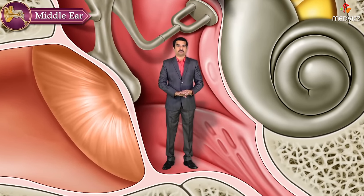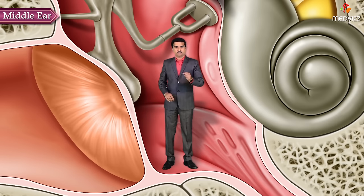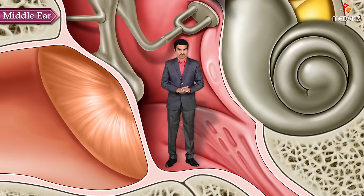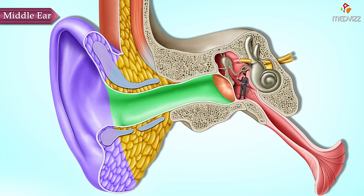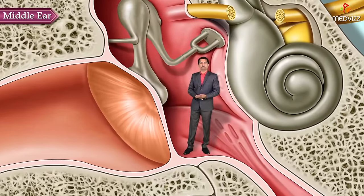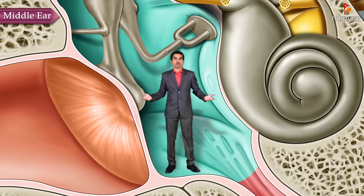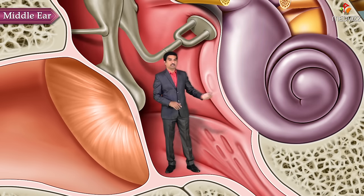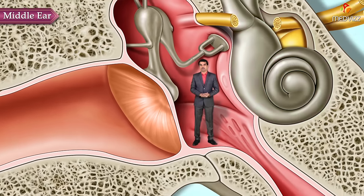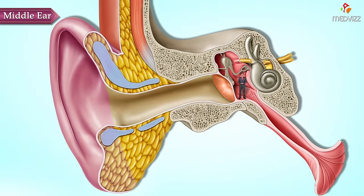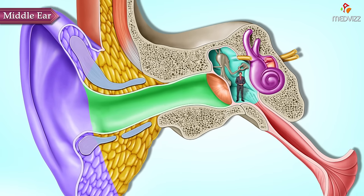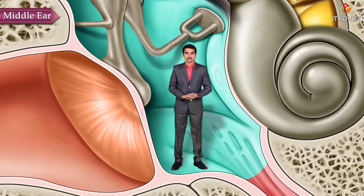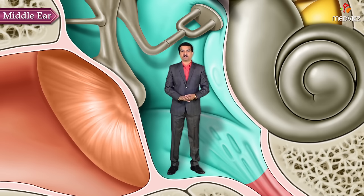Anatomy of the middle ear. The ear is structurally divided into three parts: the outer part, which is made up of the pinna as well as the external auditory canal; the middle ear, also called the tympanic cavity; and the inner ear. So the ear is divided into three parts called the outer, middle, and inner ear.